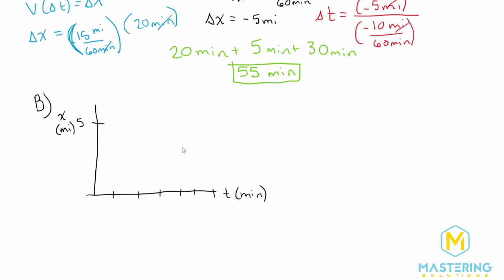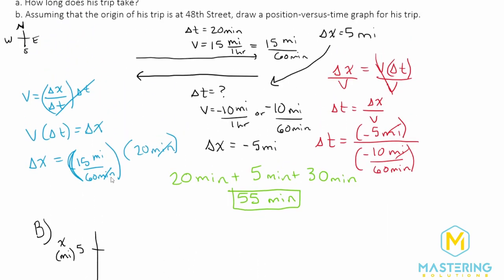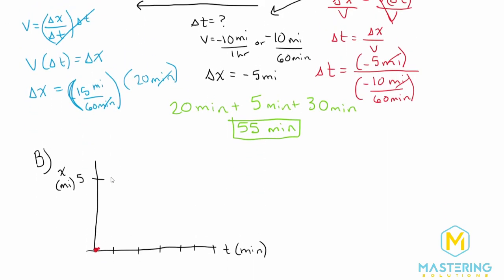And so we know that whenever he's starting off, he's starting off at zero. And then we found out that for the distance for the first part, he went five miles. And that took him 20 minutes, they said. So here's 10, 20. So at 20, he's at the five miles.